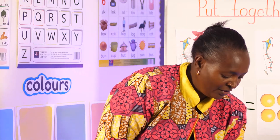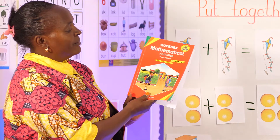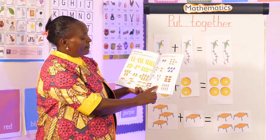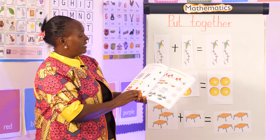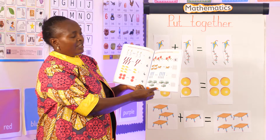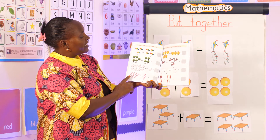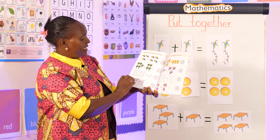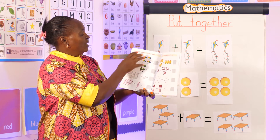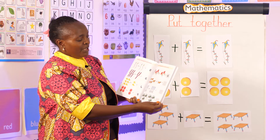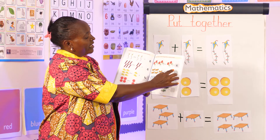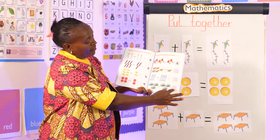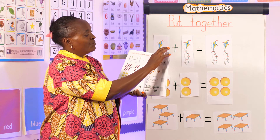In my textbook — Mathematics Activities Pupils Book Pre-Primary Two — on pages 75, 76, 77, 78, 79, and 80, there are activities about putting together. You can do these activities at home with your siblings or parents, count, and write the number in the box at the extreme right of the book.